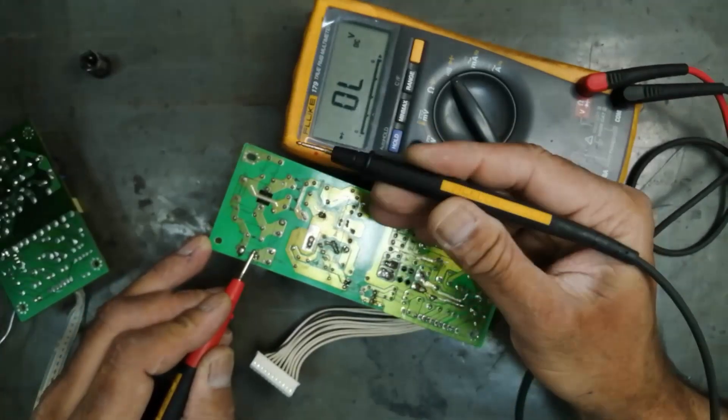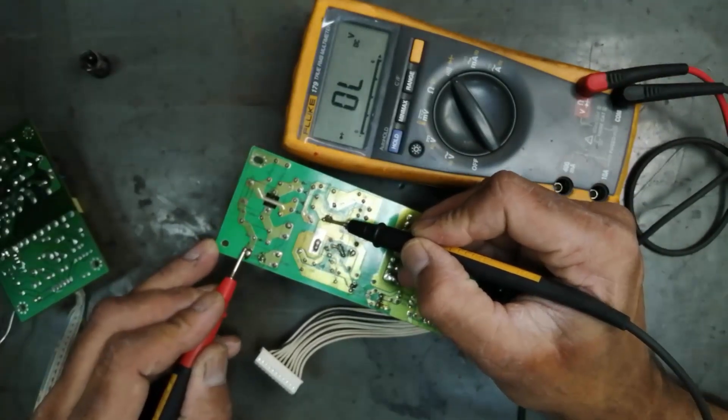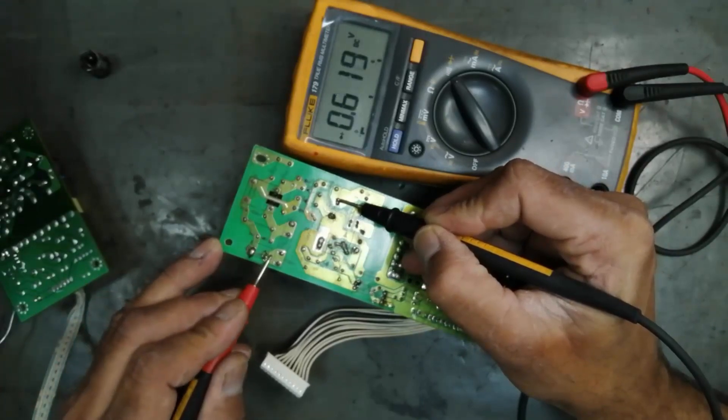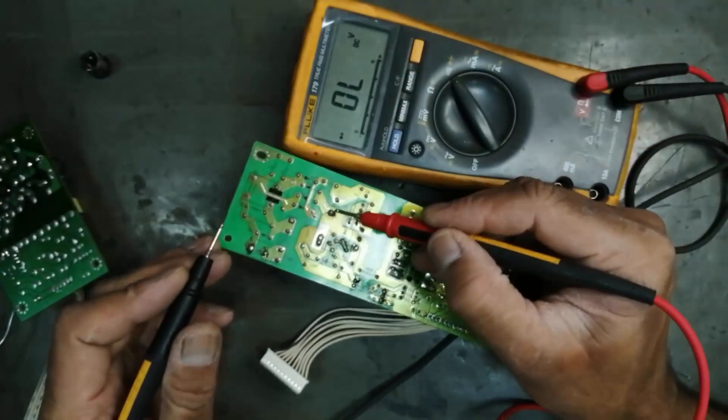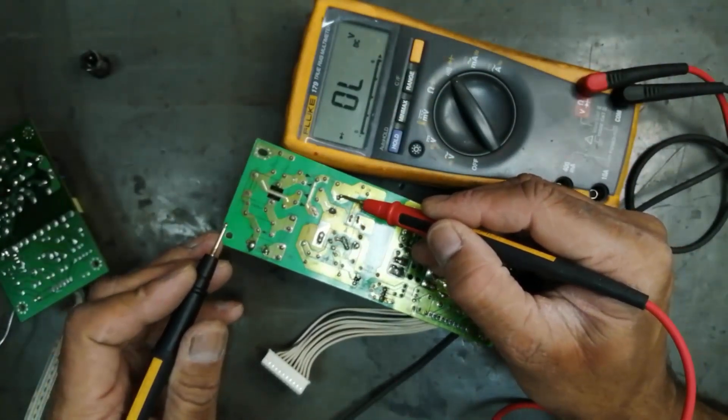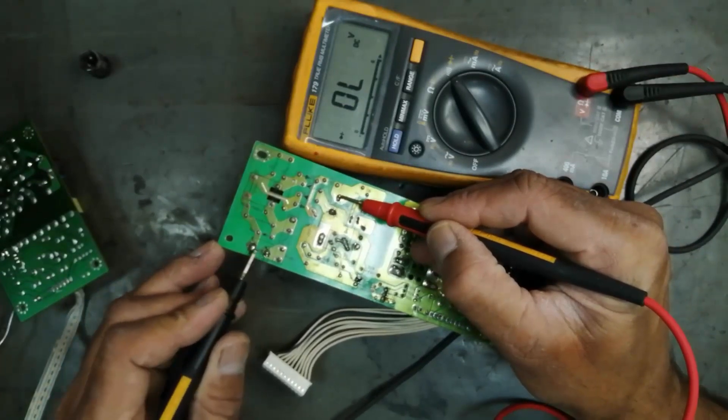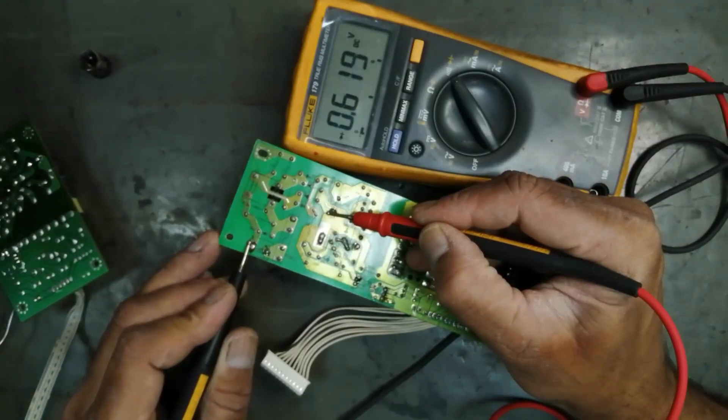Now move this lead here - no indication. On one terminal you will find this reading. Now swap the leads. First we found reading here, now we will not find reading here. Now connect the lead here - reading available, reading available.